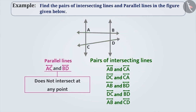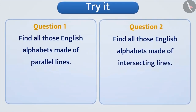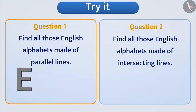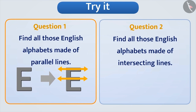Now you know about parallel lines and intersecting lines. Try to solve the following questions yourself. Question 1: Find all those English alphabets made of parallel lines. For example, the alphabet E — on extending the lines, they never meet. Hence, it is made of parallel lines.